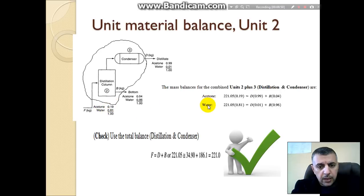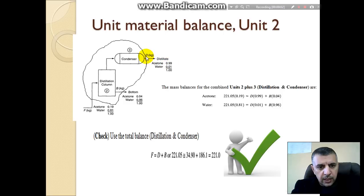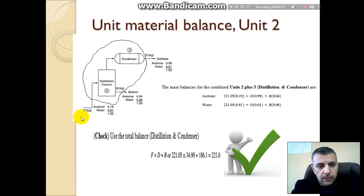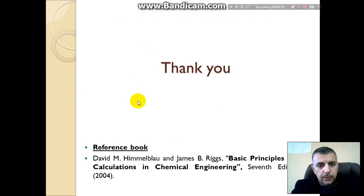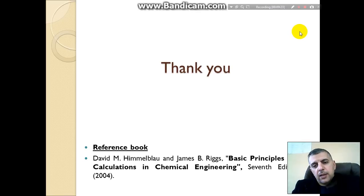For unit number two plus three — the distillation column plus condenser — there is no air, so two material balance equations are used: one for acetone and one for water. The amount of acetone in F equals the amount of acetone in D plus the amount of acetone in B. You can check your answer using the total material balance: F equals D plus B. Thank you for listening; see you in the next lecture.